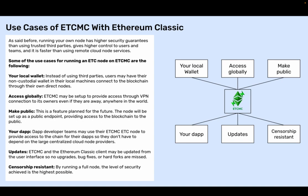Access globally: ETCMC may be set up to provide access through a VPN connection to its owners, even if they are away anywhere in the world. Make public (a feature planned for the future): the node will be set up as a public endpoint, providing access to the blockchain to the public. Your dApp: dApp developer teams may use their ETCMC ETC node to provide access to the chain for their dApp, so they don't have to depend on large centralized cloud node providers.